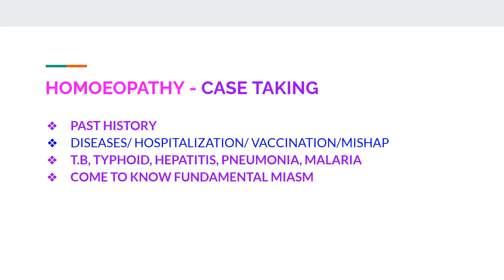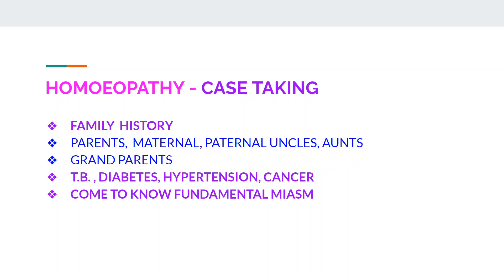Past history and family history are very important, as they give an idea about the fundamental miasm. In past history, ask the patient about diseases in the past, any hospitalization, vaccination, or mishap — specifically whether the patient suffered from tuberculosis, typhoid, hepatitis, pneumonia, or malaria — to know the fundamental miasm. In family history, ask about the history of diseases in parents, paternal uncles, and grandparents, specifically asking about tuberculosis, diabetes, hypertension, and cancer, to determine the fundamental miasm. From the chief complaint, we assess the dominant miasm present.